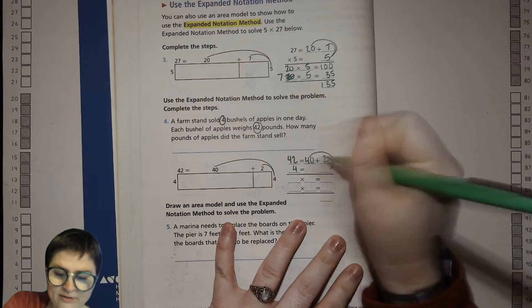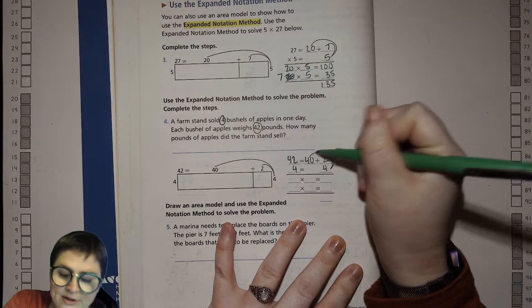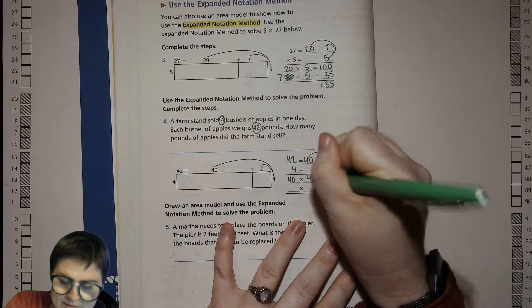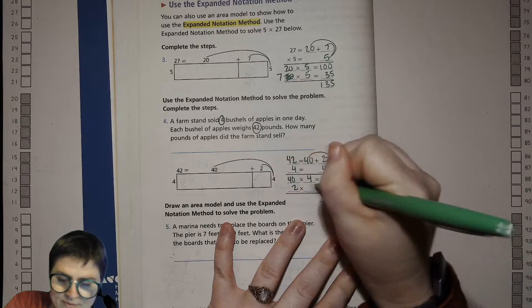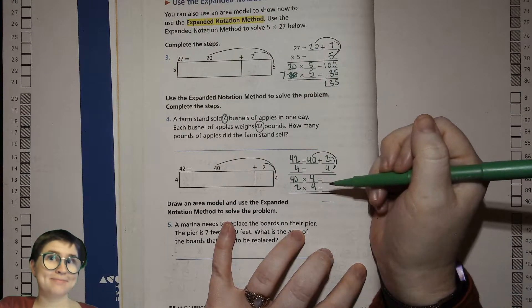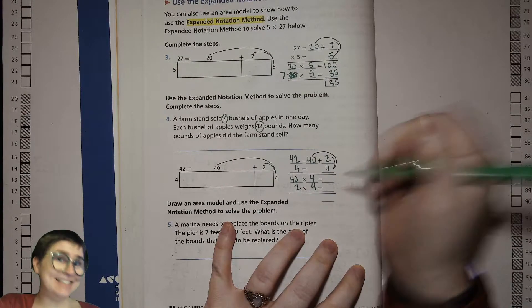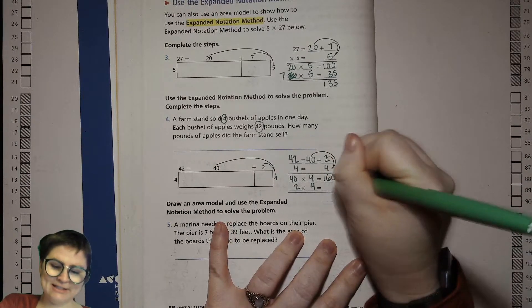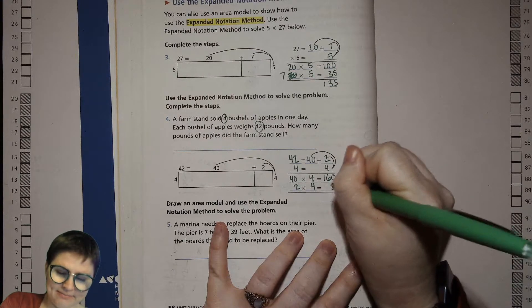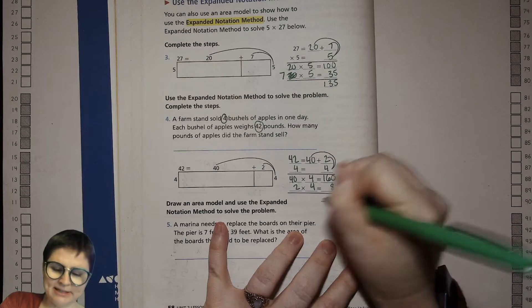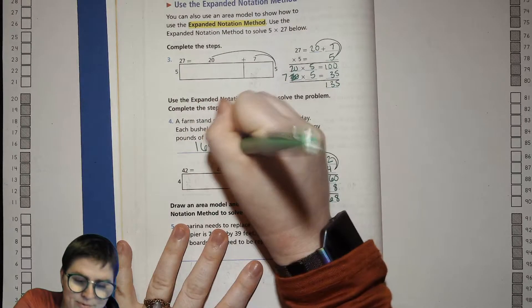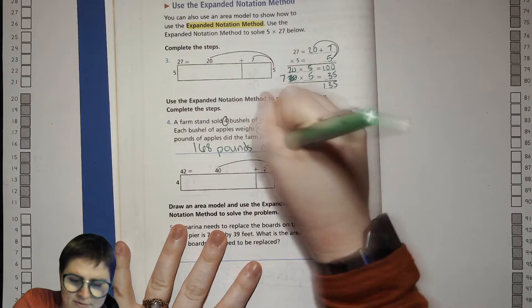Our 4 just is 4. Now we're going to do 40 times 4 and 2 times 4. So 40 times 4? Well, what's 4 times 4? 16. And then 16 tens is 160. 2 times 4 is 8. 160 plus 8 is 168. So 168 pounds of apples.